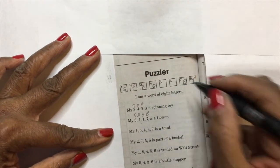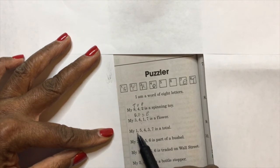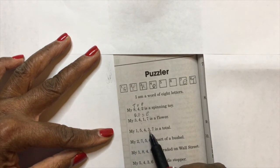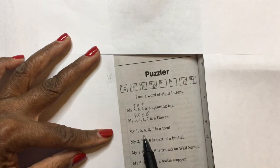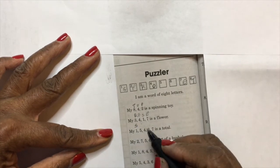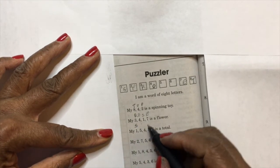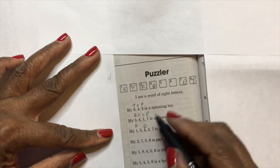Okay, all right. Third clue: 'my one, my five, my four, my three, my seven is a total.' A total, sum. Hmm, okay. Well, we already know that one is an S—we're guessing that one is an S. We don't have a five yet. We know that four is an O. We know that three is an R.